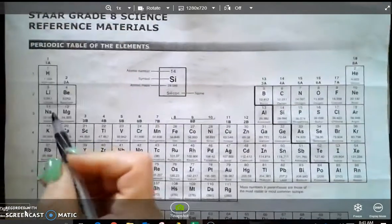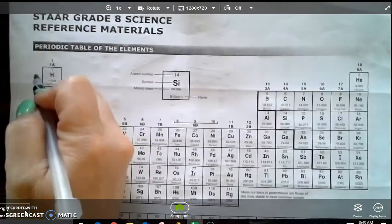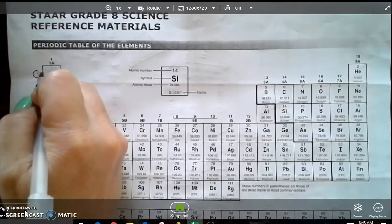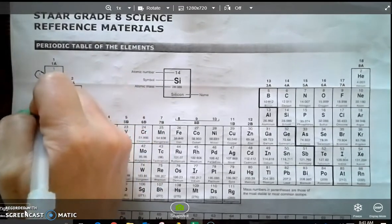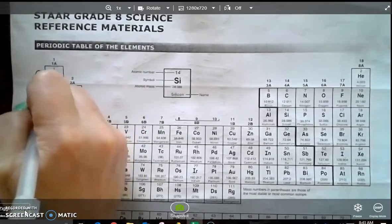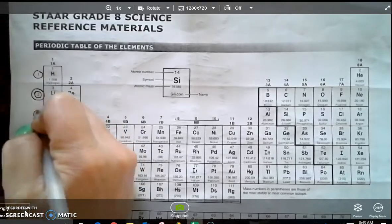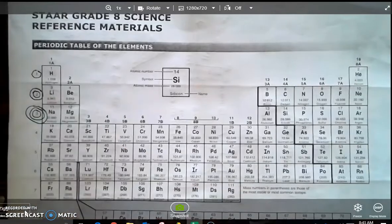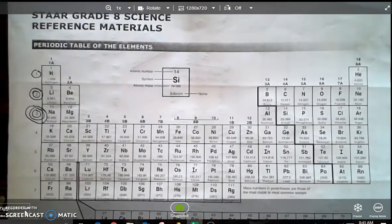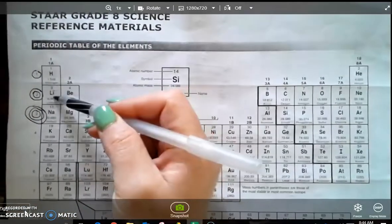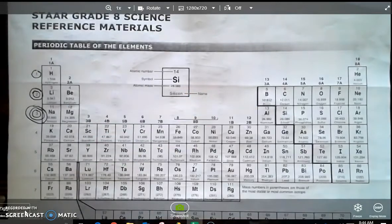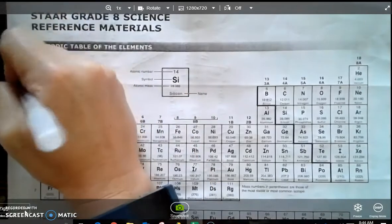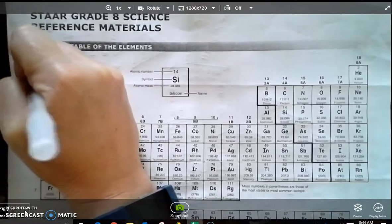Over here where you have your periods, let's go ahead and circle. One has one circle. Two will have two. We will also call these shells or orbitals. So your periods will tell you which amount of orbitals they have. So period one has one, period two will have two, period three will have three, period four will have four. So again, we'll call these shells.